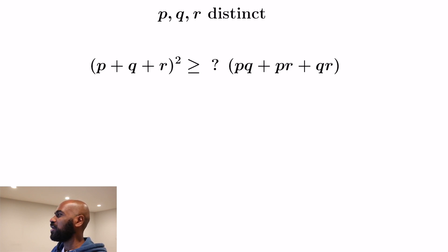Suppose P, Q, and R are distinct. Can you bound (P+Q+R)² by some constant times PQ+PR+QR? And how big can you make that question mark constant?